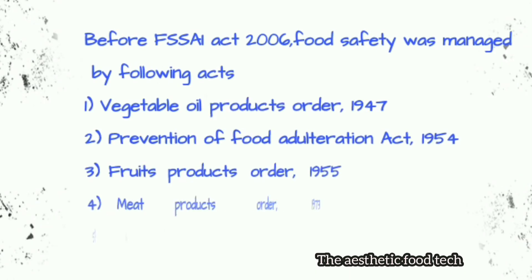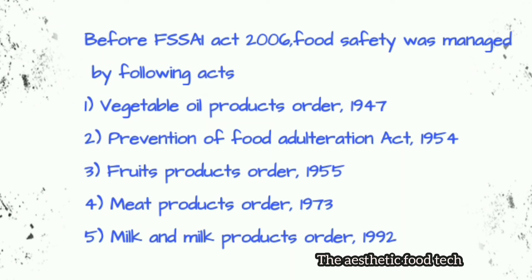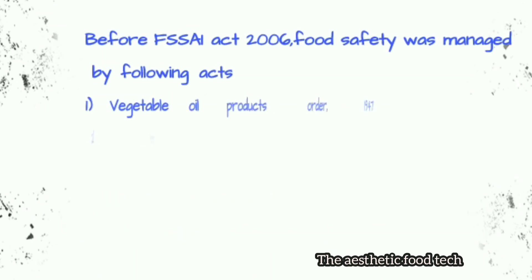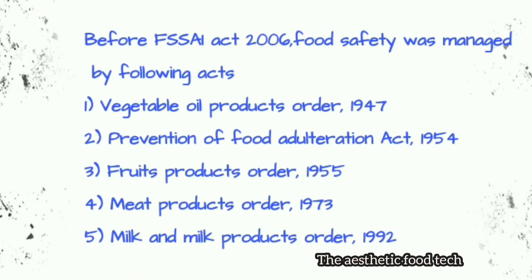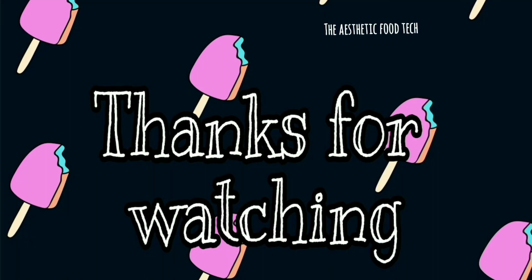Let us look at certain other acts that were followed in our country before the FSSAI Act was introduced. These acts were used to manage food security in our country till 2006. Those acts include: the Vegetable Oil Products Order of 1947, the Prevention of Food Adulteration Act of 1954, the Food Products Order of 1955, the Meat Food Products Order of 1973, and finally the Milk and Milk Products Order of 1992.